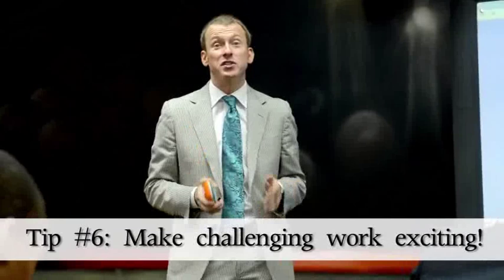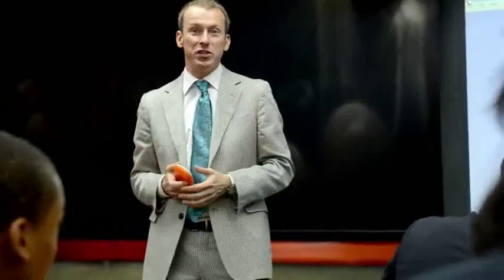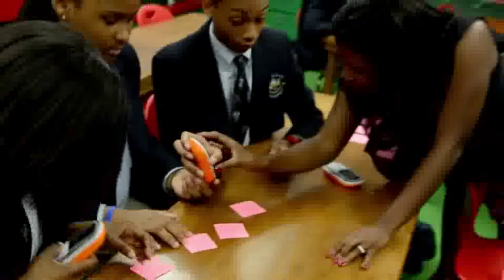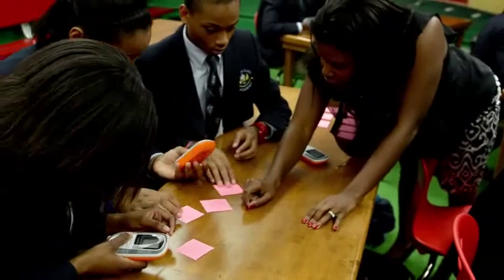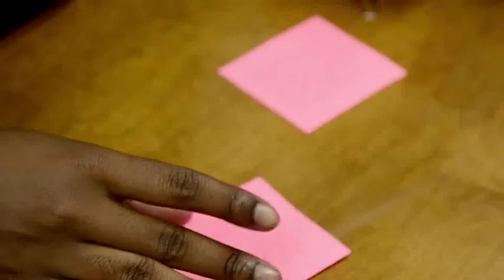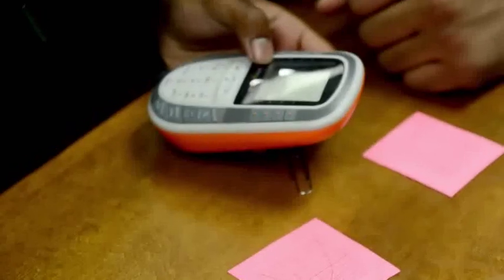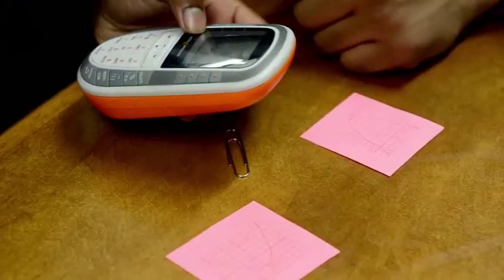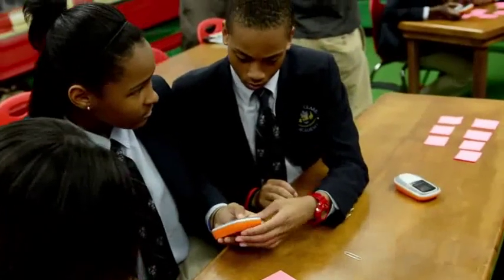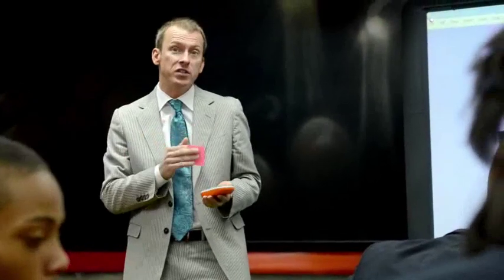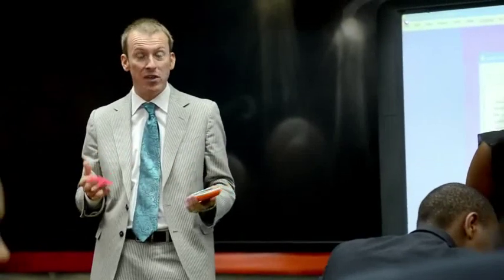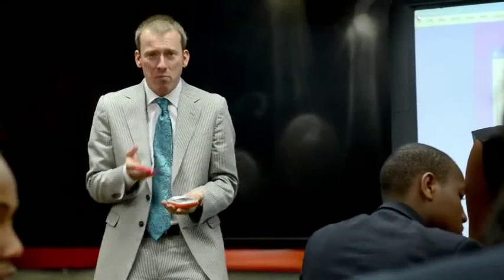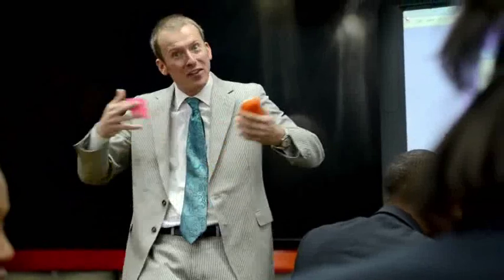Tip number six: use the active expressions to make really challenging work exciting. Mrs. Goff is our amazing algebra teacher here and she does an activity where she gives the kids a series of twelve parabolas. They then have to take the picture and look onto the active expression. On the active expression, a function will appear. The students then have to figure out by working together how the coefficients of the function actually affect the parabola. It's great and exciting, and it makes something that is really hard really fun because the kids enjoy working together and using the active expression to figure out the hard work.